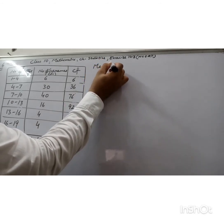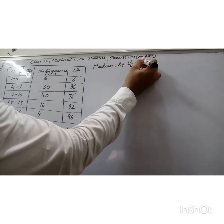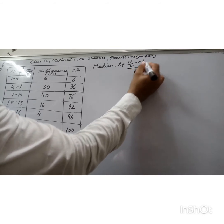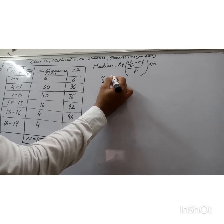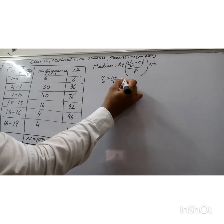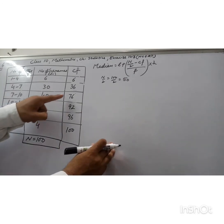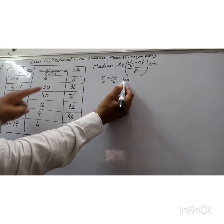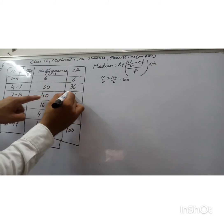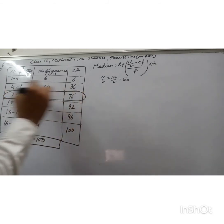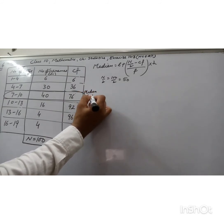The formula for median is l + (n/2 − cf) / f × h. We compute n/2 = 100/2 = 50. We select the class interval whose cumulative frequency is just more than 50, which is 76. Therefore, the class interval 7–10 is the median class interval.